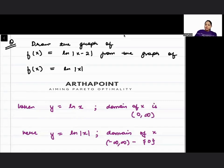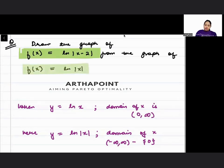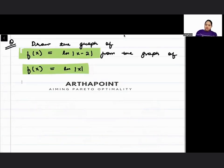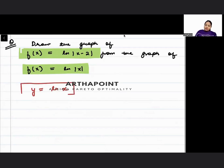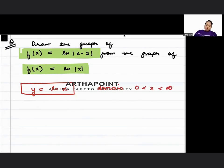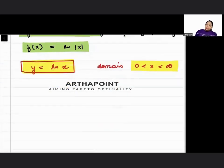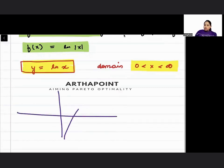Look at the graph of the function ln|x − 2| derived from the graph of the function ln x. Let's look into this question better. First, understand that whenever y is equal to ln x, the domain of this function is x belonging to (0, infinity). If I want to draw y = ln x, we know it looks like this.